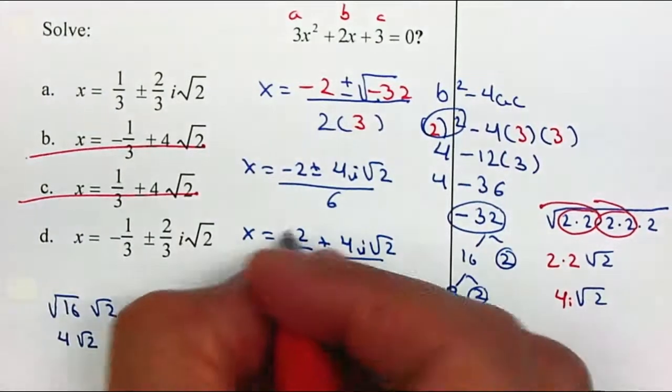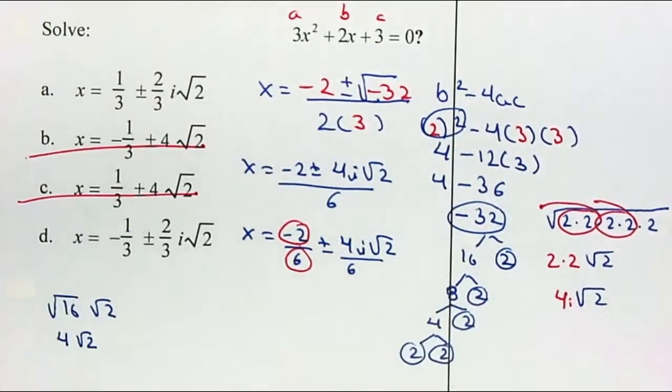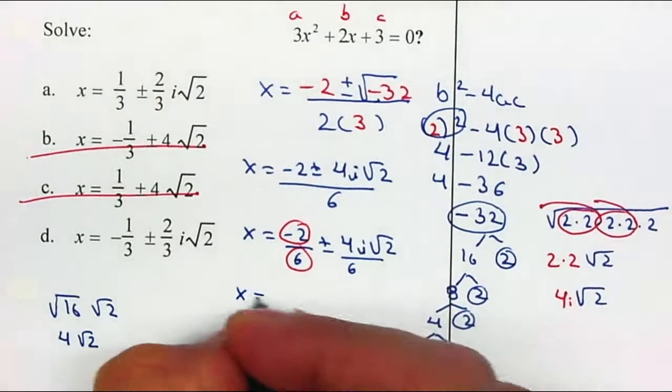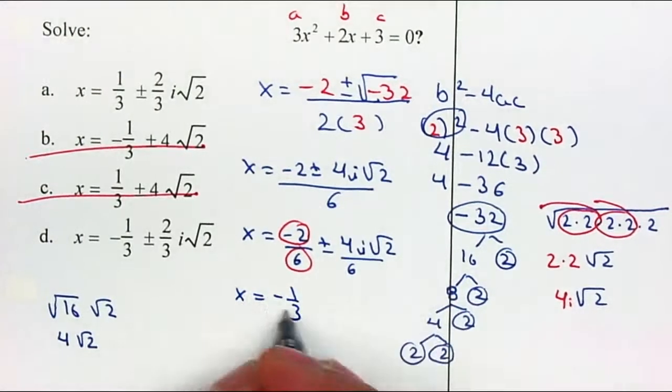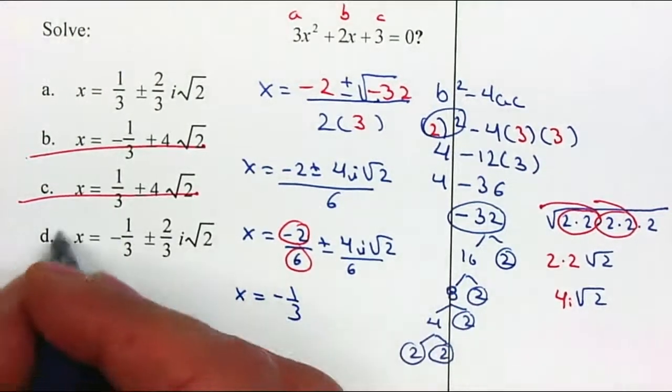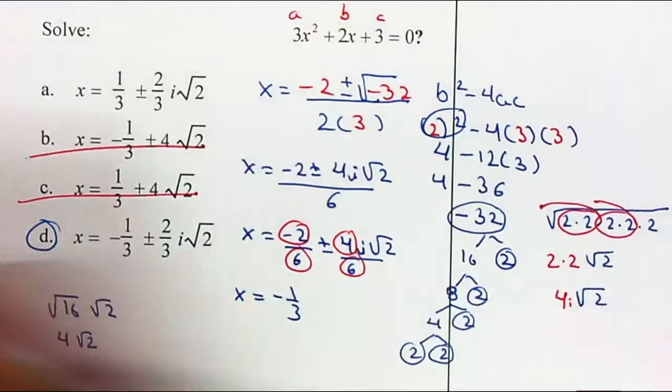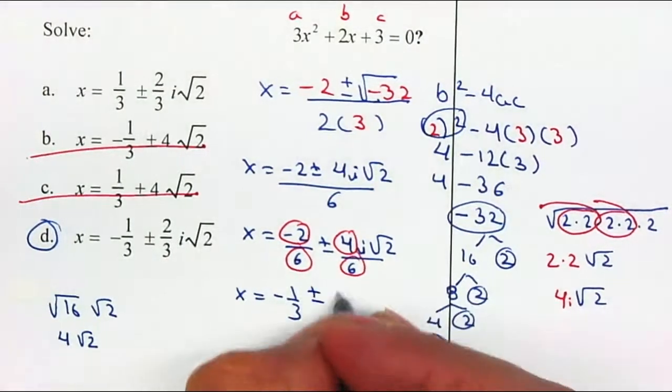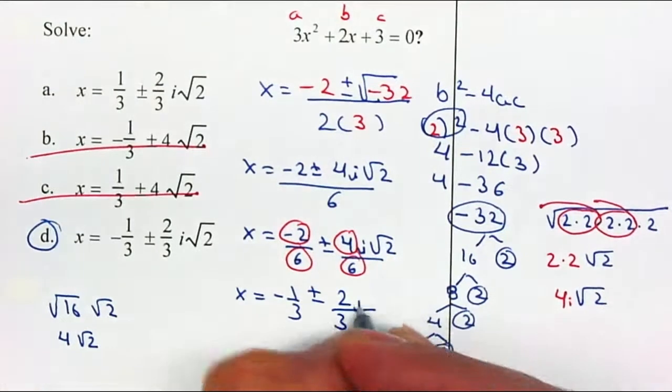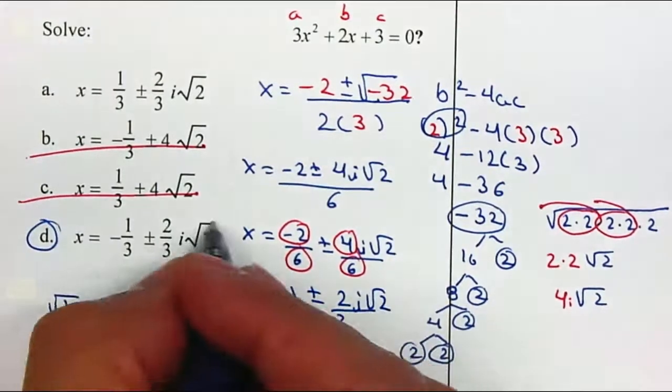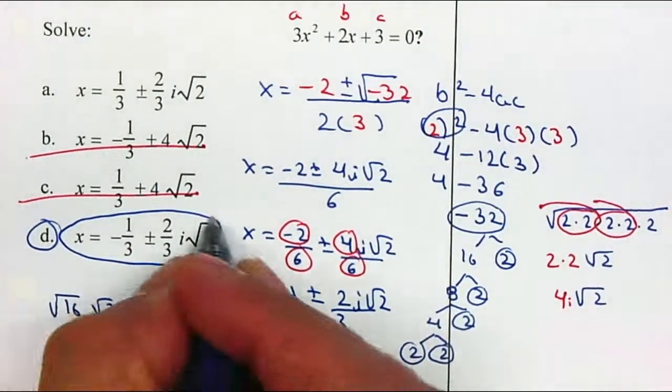X is equal to negative 2 over 6 plus or minus 4i the square root of 2 over 6. I'm going to reduce my numbers. So it gives me negative 1 third. And it's negative, so I know my answer will be d. And I'm going to reduce my fraction, so it gives me plus or minus 2 over 3i square root of 2. And that's how they get the full simplified answer.